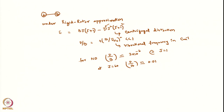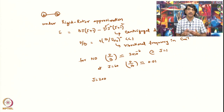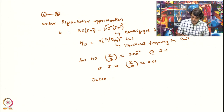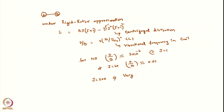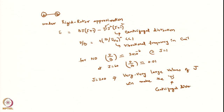Only when J goes to very large values, let us say J equals 200, will the centrifugal distortion constant start making an effect. So one has to go to very, very large values of J to make the centrifugal distortion constant D prominent. Otherwise, in general, one can ignore it.